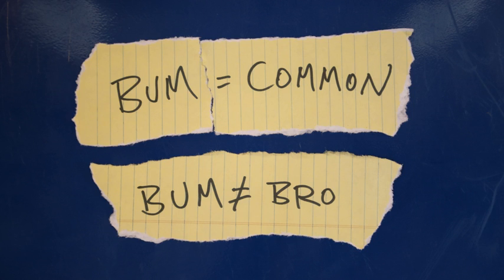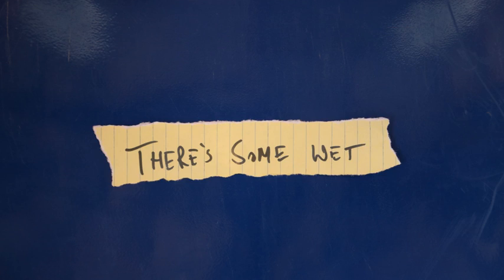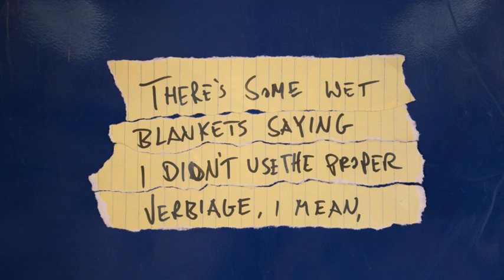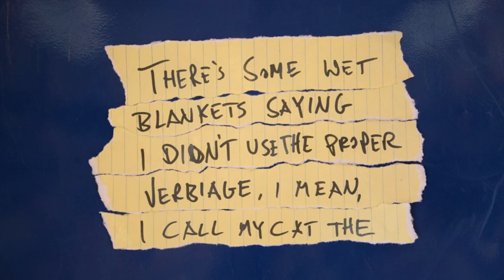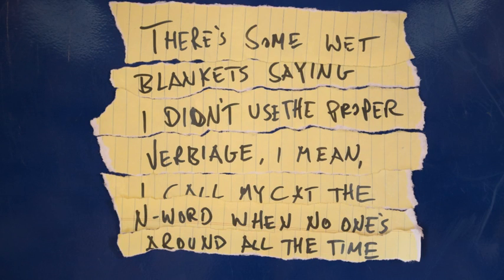All right, let me introduce you to quote number three. Now after Brad Johnson got a little pushback from the Seattle community suggesting his language and using words like bum is inappropriate, he said this: There's some wet blanket saying I didn't use the proper verbiage. I call my cat the N-word when no one's around all the time.